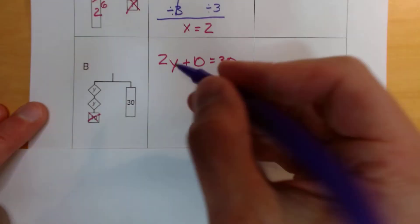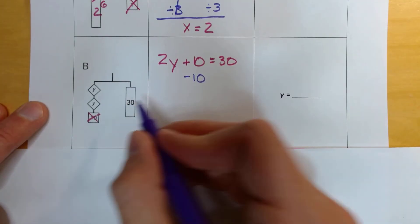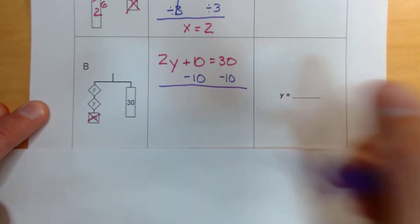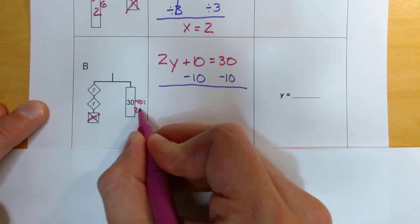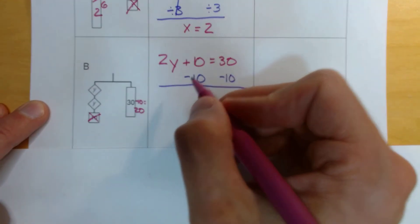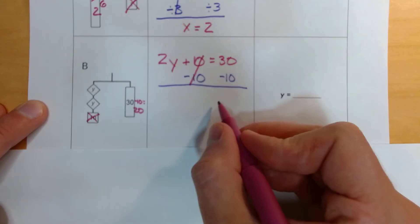Okay, so I'm going to take away 10 from here as well, which would make 20. Now, 10 minus 10 is 0, so we basically canceled those out. So some people, again, like to put a little line through that. 30 minus 10 is 20. So now I know that 2y equals 20.